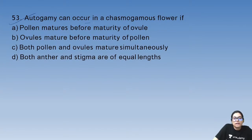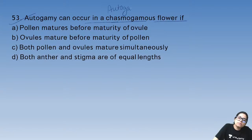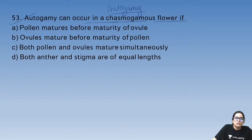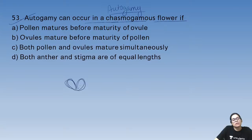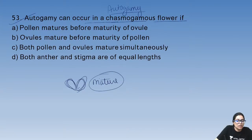Question 53: autogamy can occur in a chasmogamous flower — when both pollen and ovules mature at the same time, self-pollination (autogamy) can happen. The answer is C.